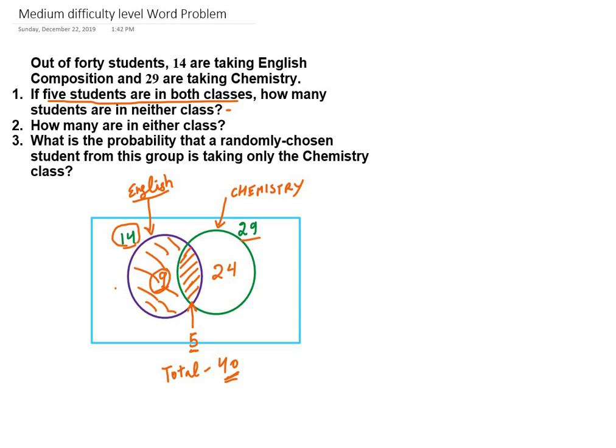students are in neither class. So only English we have 9 students, and only Chemistry we have 24 students. These are the first two, and